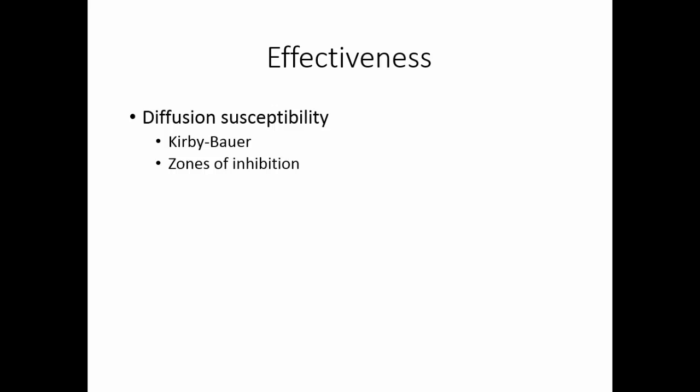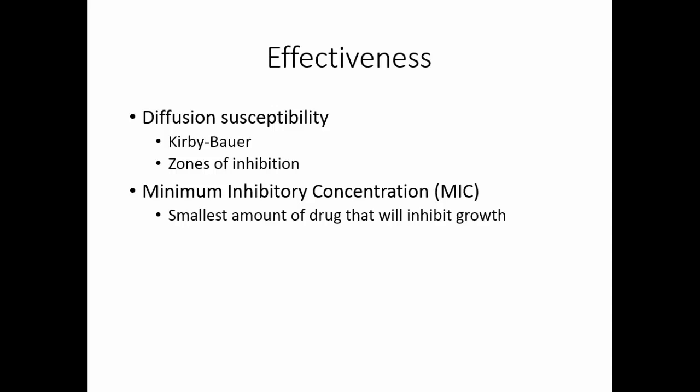Depending upon the zone size, you know whether the organism is susceptible or resistant to that drug. The minimum inhibitory concentration is the smallest amount of drug that will inhibit the growth of that microorganism. Here, you make several dilutions of a drug, inoculate the organism to it, and then look for the tube that has no growth.